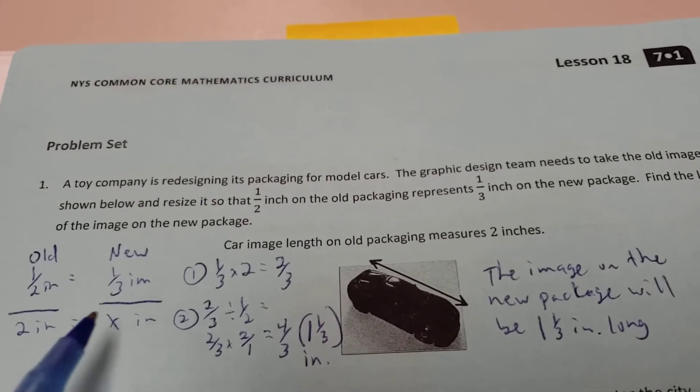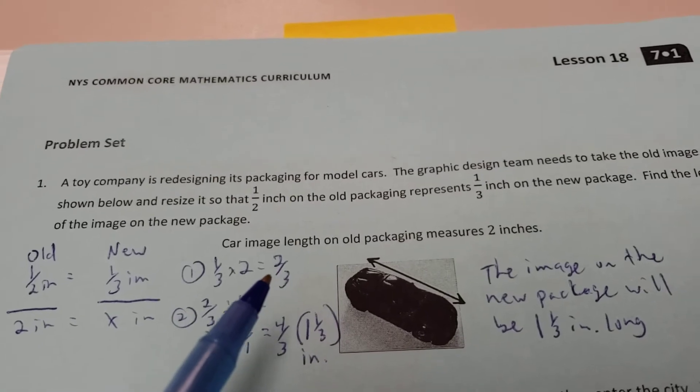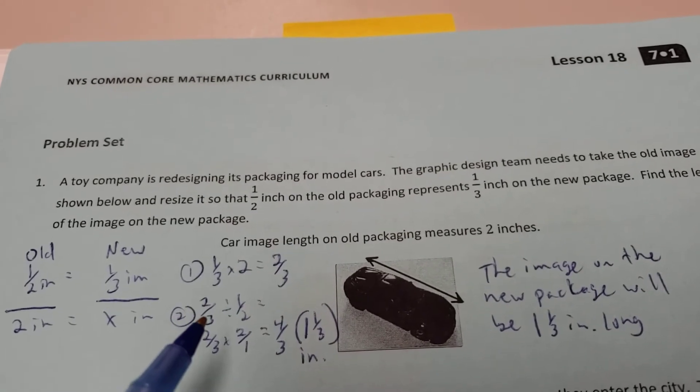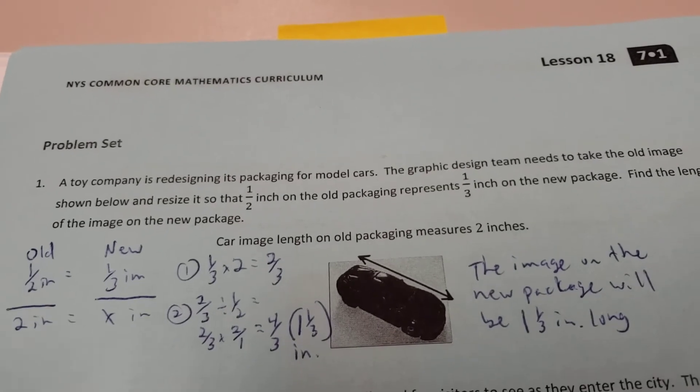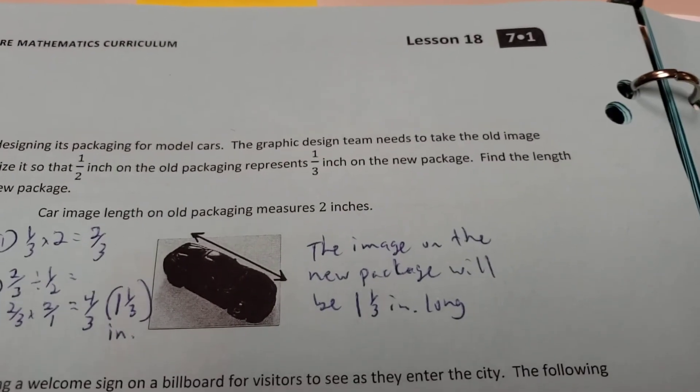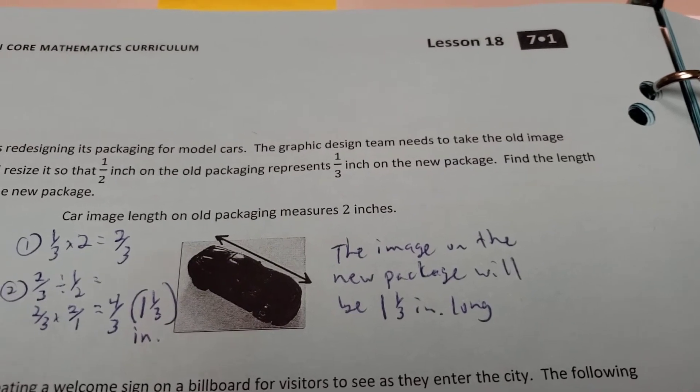Well, cross-multiply what I can. One-third times two gives me two-thirds. And then take that answer, and I get two-thirds divided by one-half. Keep change flip, and I get four-thirds, or one and one-third. The new image on the new package will be one and one-third inches long.